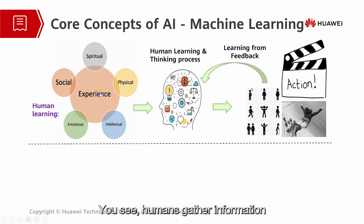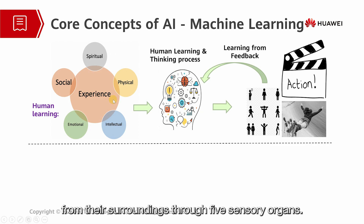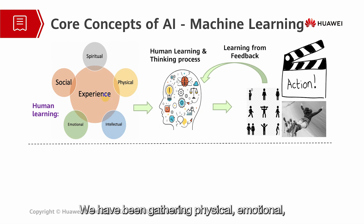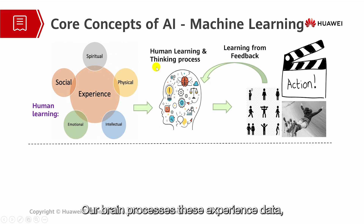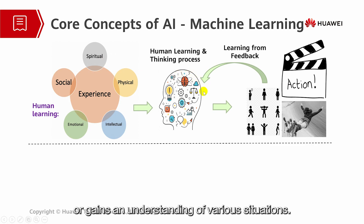Humans gather information from their surroundings through five sensory organs. We have been gathering physical, emotional, social, intellectual, and spiritual experiences since birth. Our brain processes these experience data and then draws conclusions or gains an understanding of various situations.